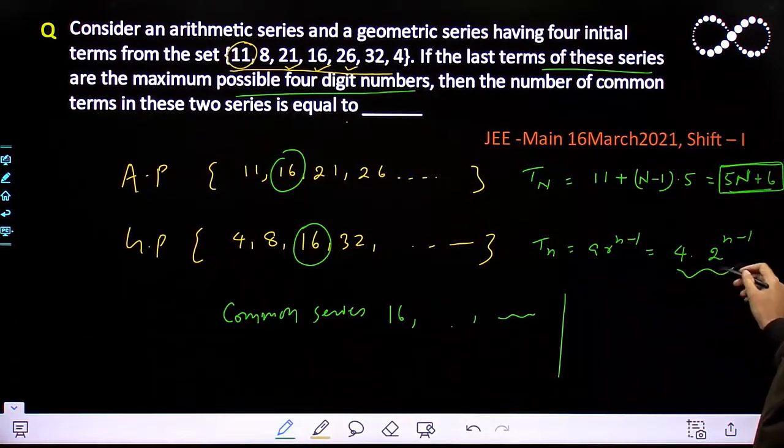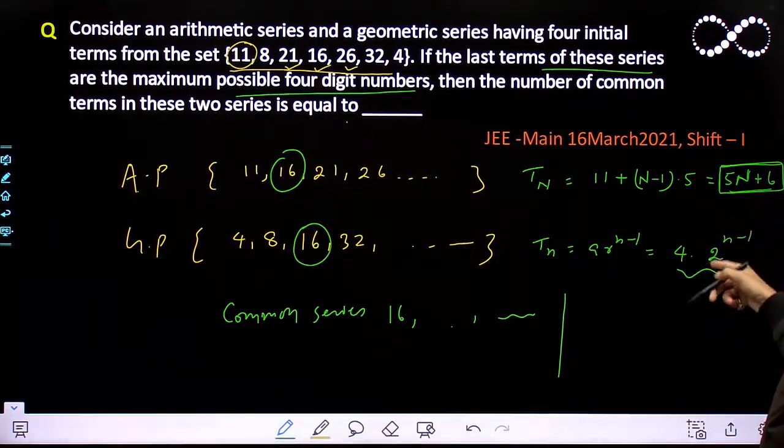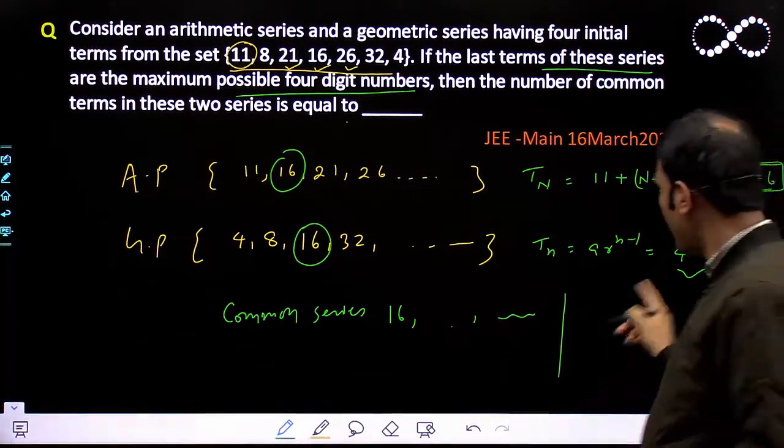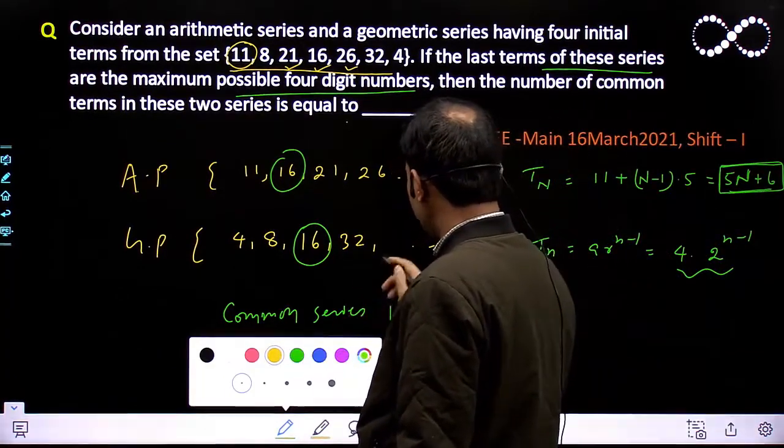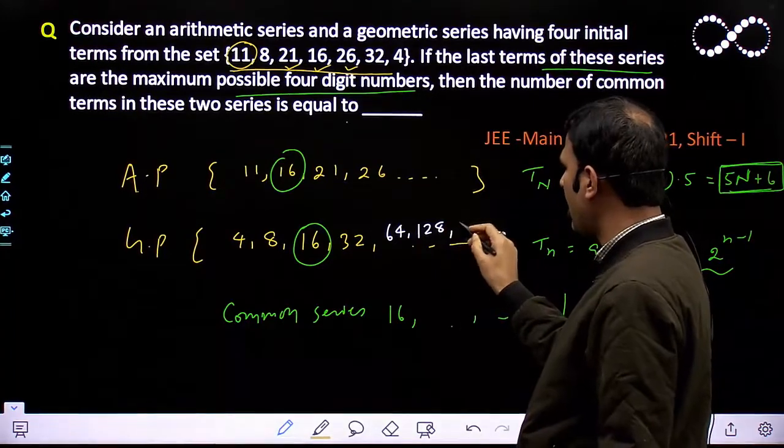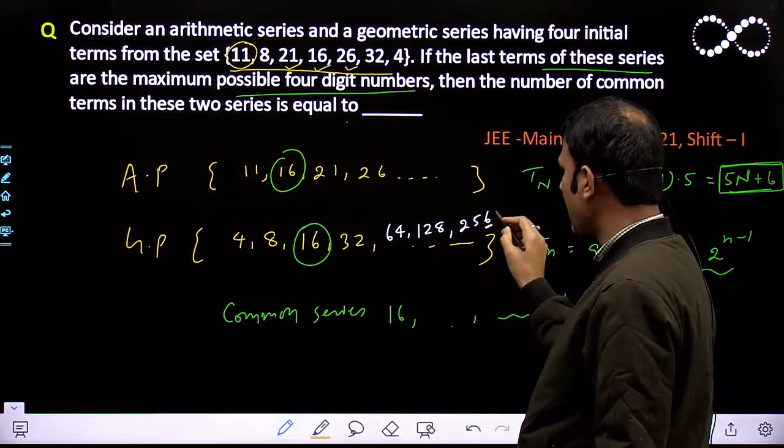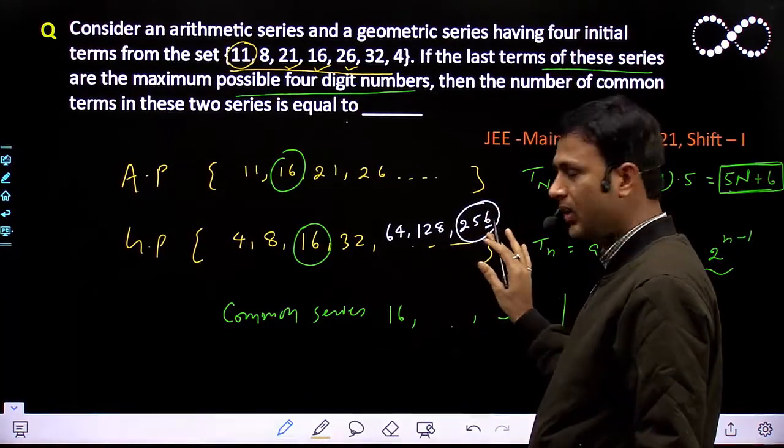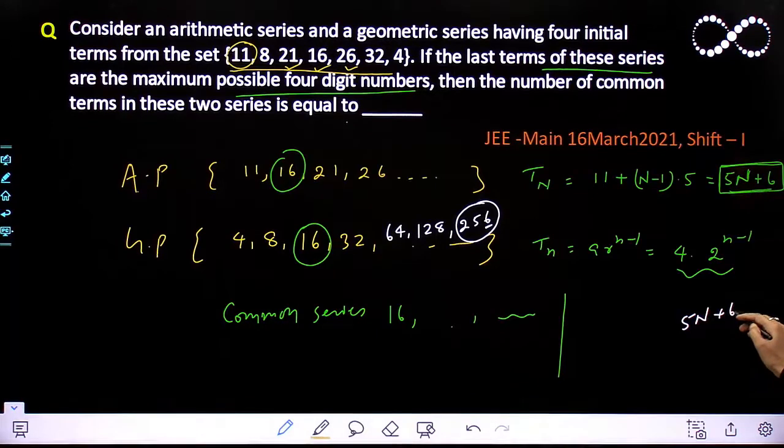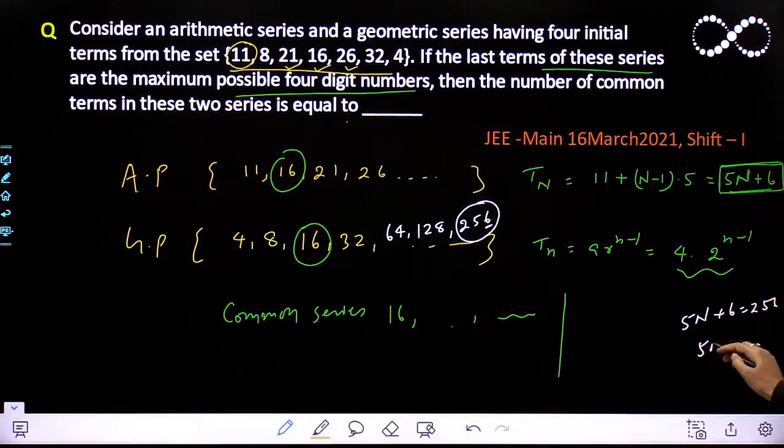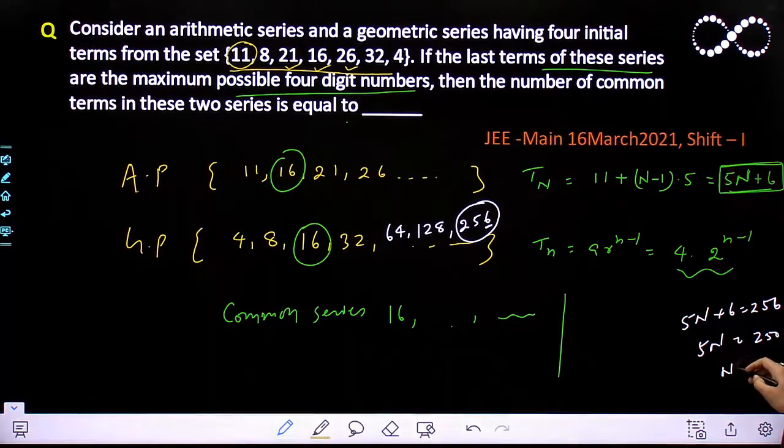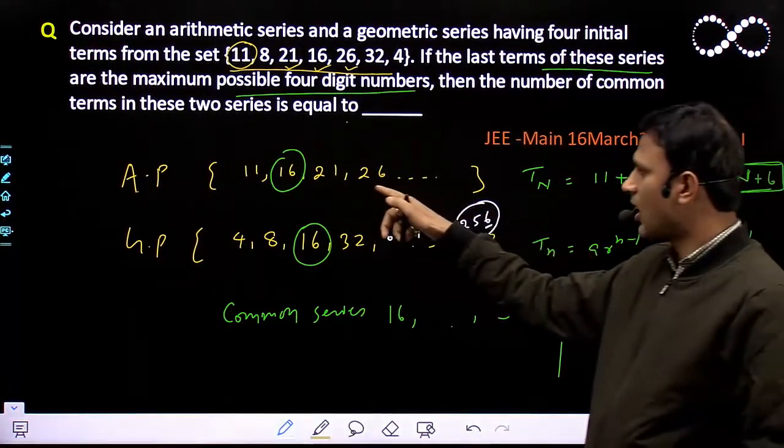What does this 5N + 6 mean? It means whatever the Nth number is, its last digit will be either 1 or 6. You see: 1, 6, 1, 6, then 31, 36... so it keeps going as 1, 6, 1, 6. Now in this, 1 cannot happen because this is 4 times any power of 2, which is even, so 1 won't occur. The 6 will occur. So we find which terms have 6. After 32 comes 64, 128... we need 6. This number is not common. 256 has last digit 6, so this can also be common.